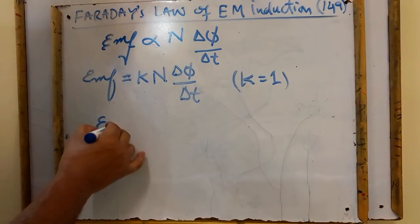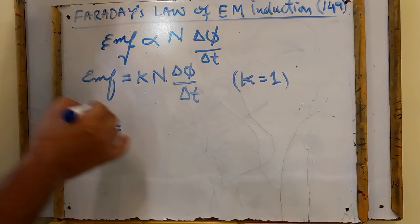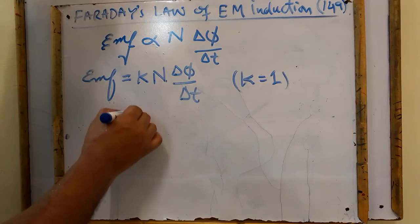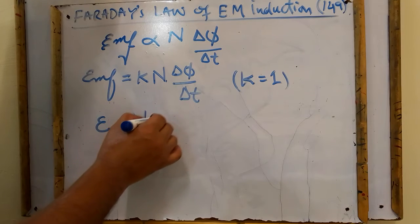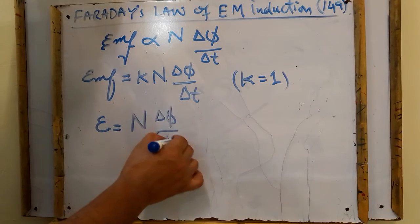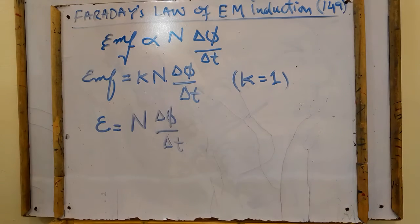So finally we can write EMF induced in the coil because of electromagnetic induction is E is equal to N delta phi divided by delta T. This is Michael Faraday's law of electromagnetic induction.